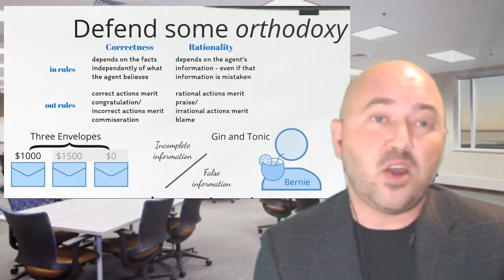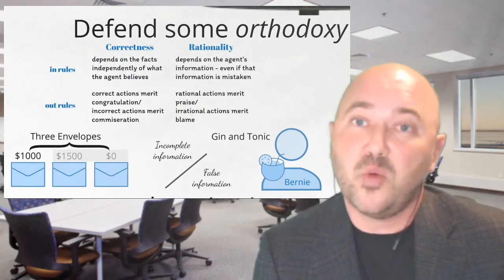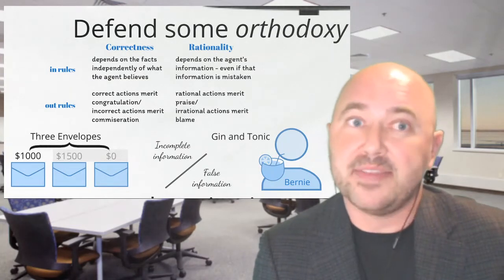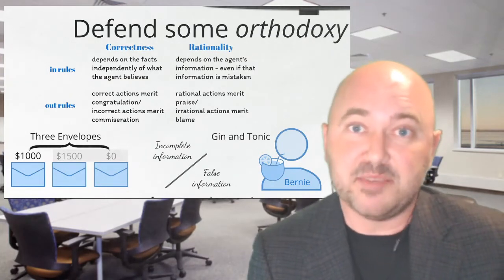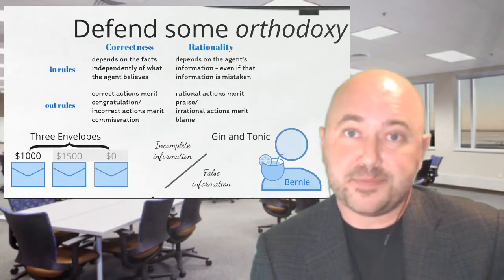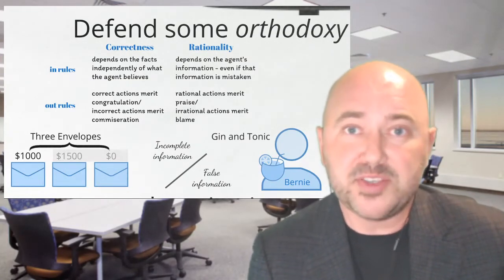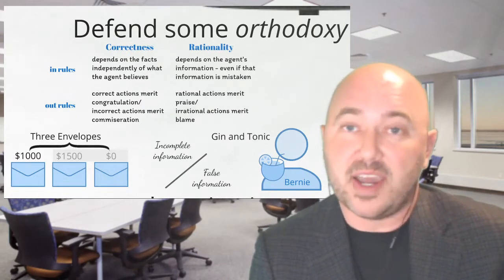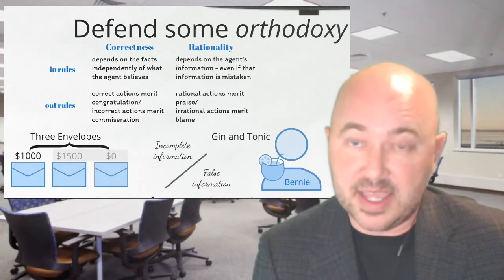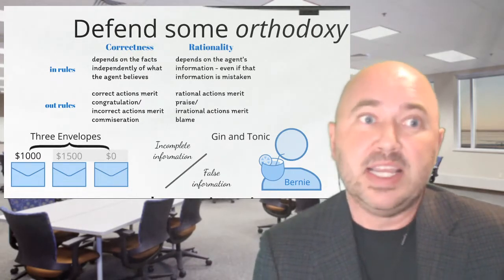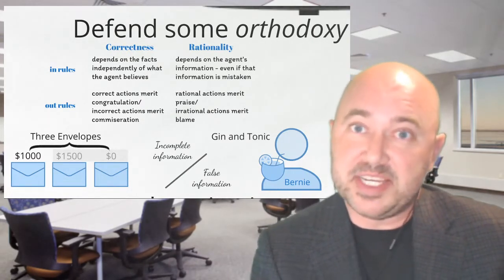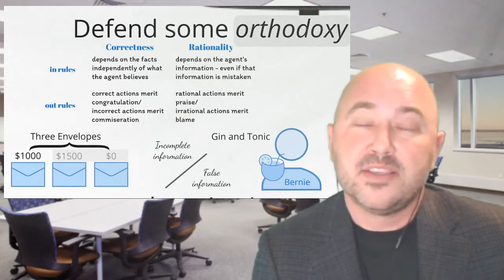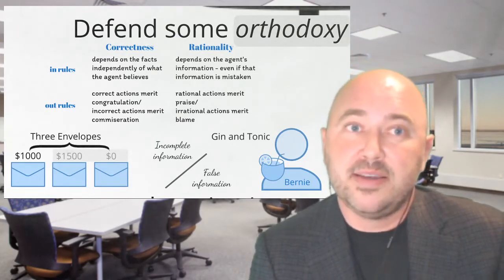So once we start thinking rationality is less subjective, we can be warmed up for thinking that correctness is less objective. Together, those are what warm people up for thinking that rationality and correctness go hand in hand. And I think they don't — they're quite independent modes of assessment. So I'm going to head off that skepticism at the source by thinking about how to defend orthodoxy at full stop.